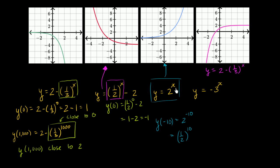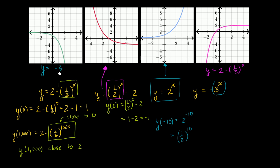Finally, by deductive reasoning, the last graph corresponds to y equals negative 3 to the x. Order of operations really matters here — exponentials have top priority after parentheses, so you take 3 to the x first and then negate it. This flips the classic exponential over the x-axis. As x gets larger, 3 to the x grows large, but we take the negative so y becomes smaller and smaller. When x is 0, 3 to the 0 is 1, so y is negative 1, which matches the graph.